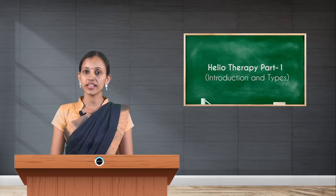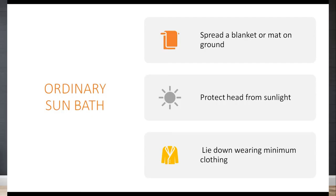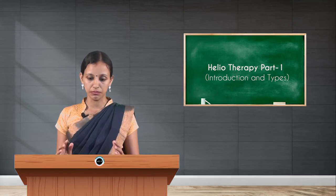The first type is ordinary sunbath. As the name suggests, it is the simplest and easiest way of taking a sunbath. The person spreads a mat on the floor and lies down under the sunlight, covering the head region from sunlight, while wearing minimum clothing.